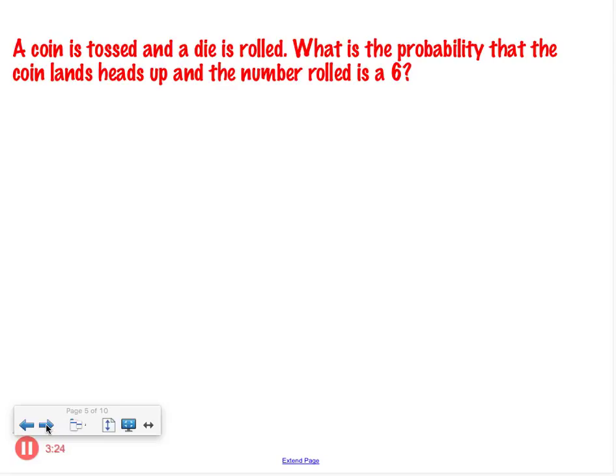A coin is tossed and a die is rolled. What is the probability that the coin lands heads up and the number rolled is a six? So they're independent, right. So what is the probability of the coin flip? How many options do you have? Two. So one over two times, and what is the chances of rolling a six on a die? One out of six. And now we just multiply. So one over twelve.